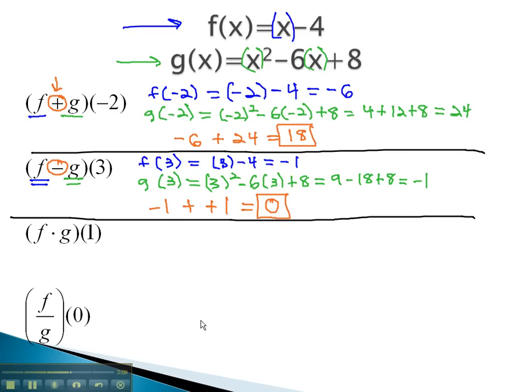Let's find out what f times g of 1 is. This means we plug 1 into the f function, giving us 1 minus 4, which is negative 3.